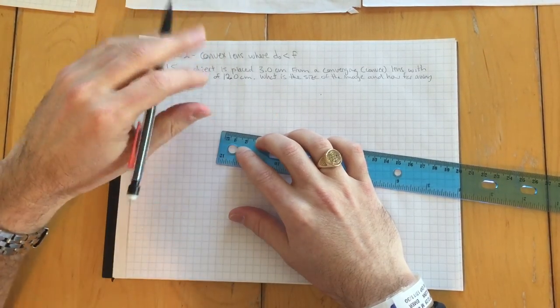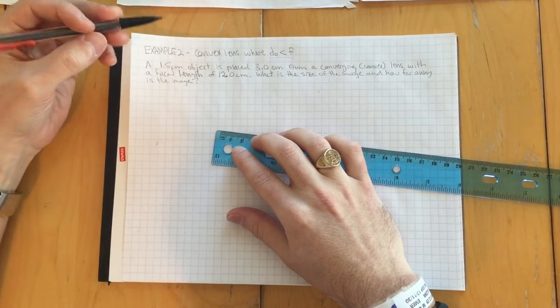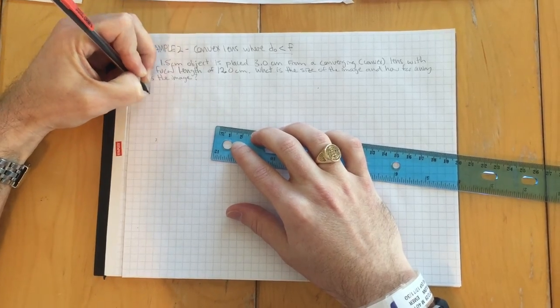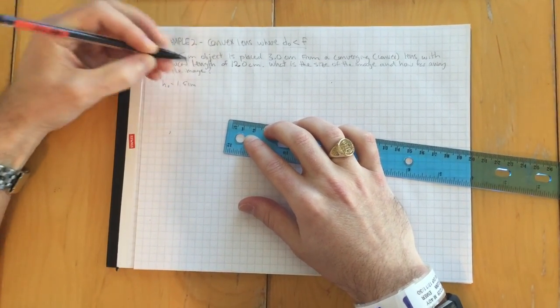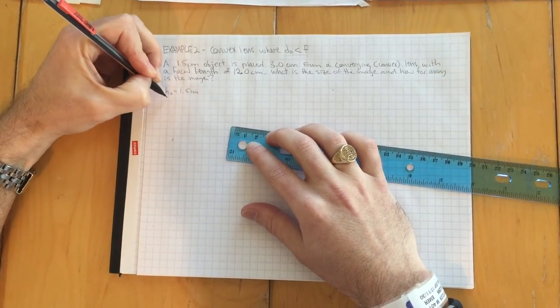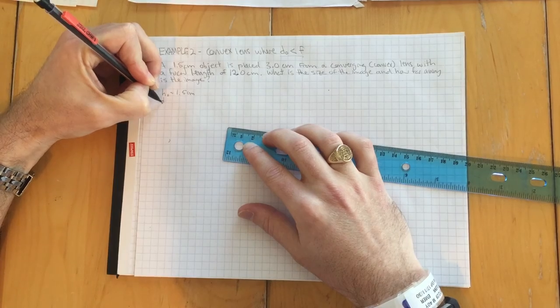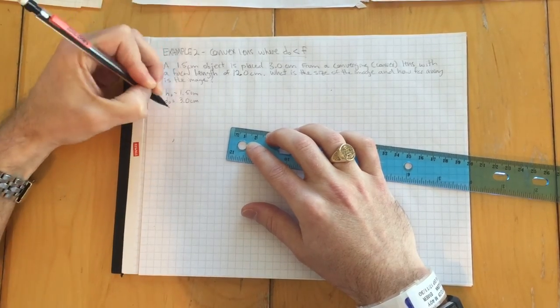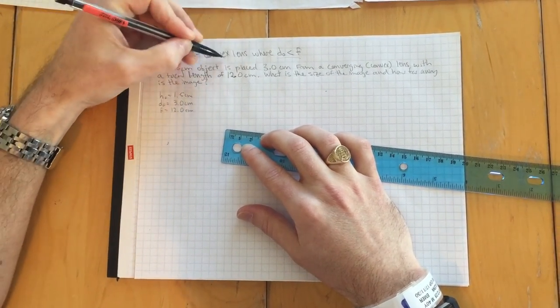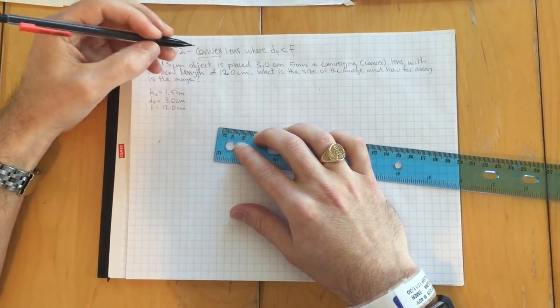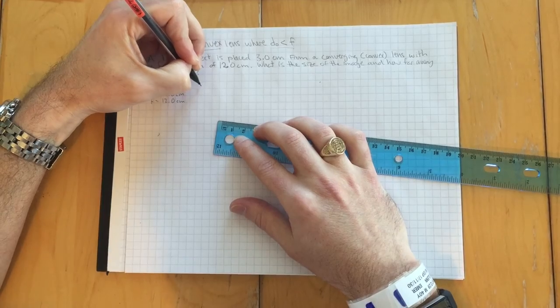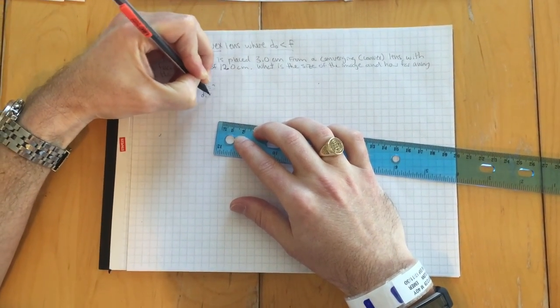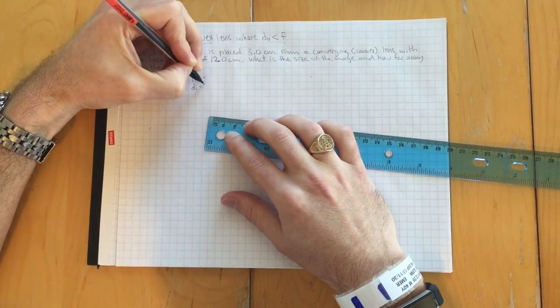So in this case, it's all very similar, but there's a couple of little things you got to do differently in this sort of scenario. So here we have again an object that is 1.5 centimeters high. The object is placed three centimeters from a converging lens or a convex lens. So that is the distance away from the lens it is. And the focal length this time is 12. We're looking for the height of the image and we're looking for the distance where the image would appear to your eye when you're looking at it through the lens.